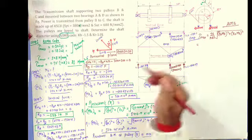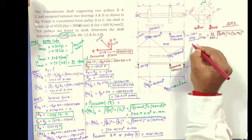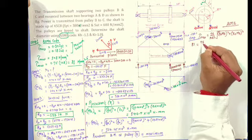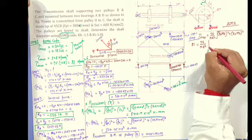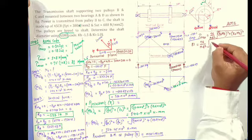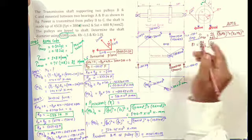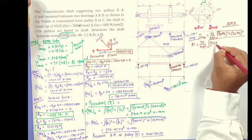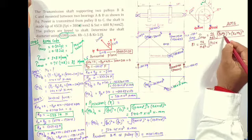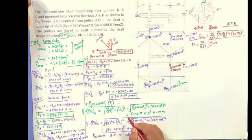Tau max we have calculated, see here 81. Now 16 by pi d cube, square root of kb, how much they have given? kb is 1.5 into mb. mb which we have selected, maximum bending 140.